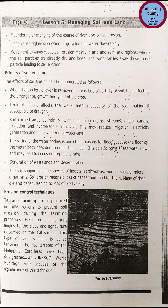Effects of soil erosion: when the top fertile layer is removed, there is loss of fertility of soil, affecting the emergence, growth and yield of crops. Textural change affects the water-holding capacity of the soil, making it susceptible to drought. Soil carried away by rain or wind ends up in drains, streams, rivers, canals, and irrigation and hydroelectric reservoirs, reducing irrigation, electricity generation and navigation of waterways. Silting of water bodies raises the floor of the water body, causing it to contain less water and potentially leading to floods during heavy rains.